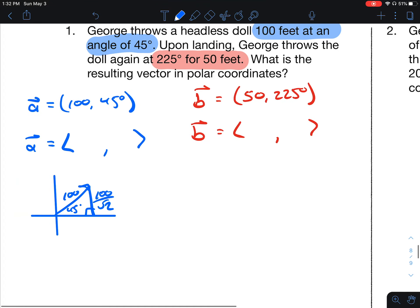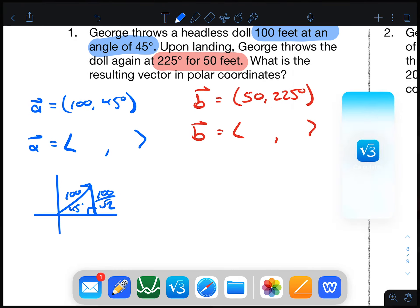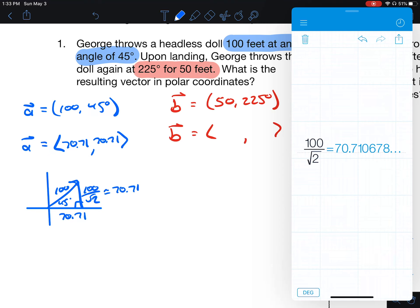100 divided by the square root of 2 is about 70.71, and both of these legs are the same. So the components for vector A is 70.71 going to the right and going up.